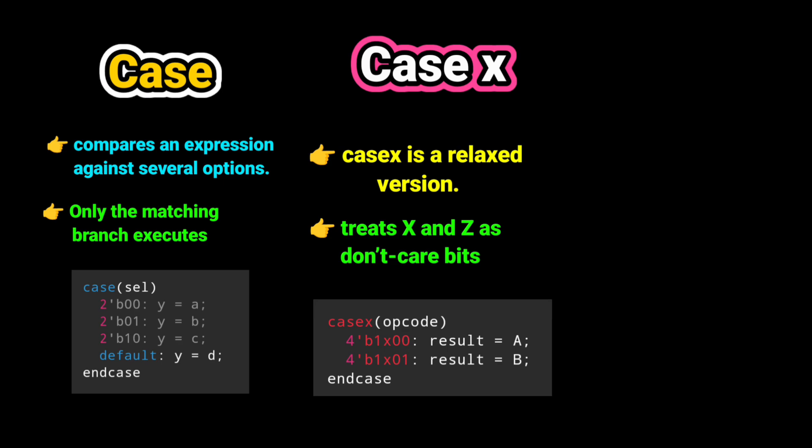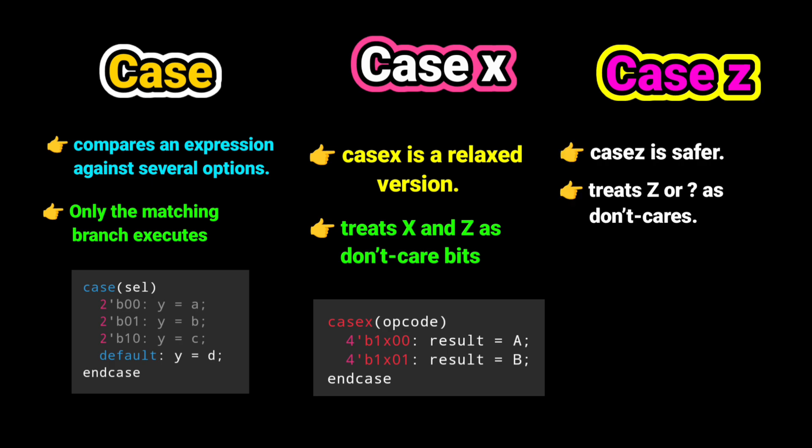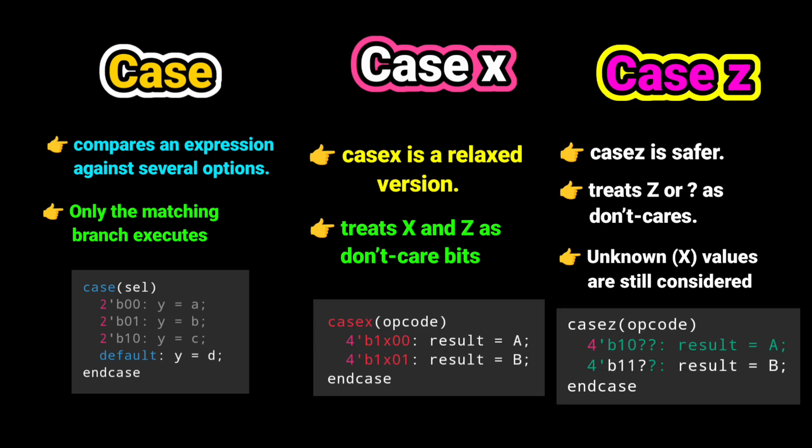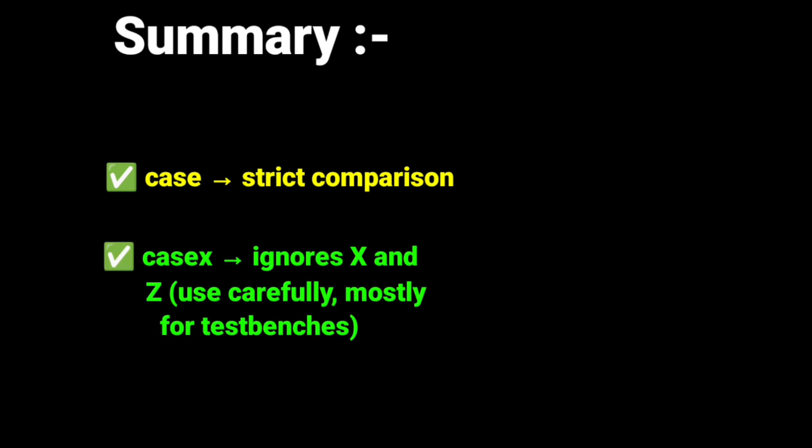And the last one is CaseZ. CaseZ is safer. It only treats Z or question mark as don't cares. Unknown (X) values are still considered, so bugs are not hidden. This is the example of CaseZ. That's why in RTL coding, CaseZ is preferred over CaseX. So to summarize: Case—use it for strict comparison. CaseX—ignores X and Z, use carefully, mostly for test benches. CaseZ—ignores only Z or question mark, safer in RTL.